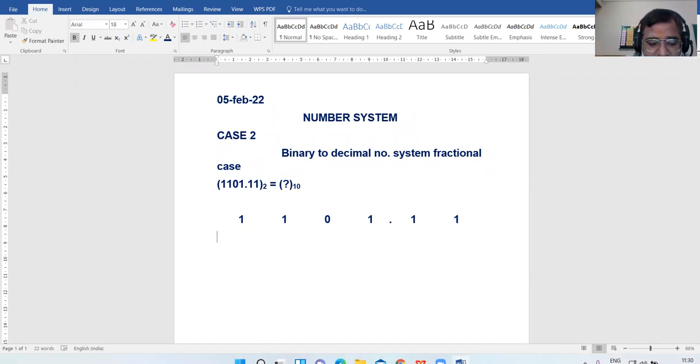The digit before the point - this 1 - will be 2 to power 0. Then 1 into 2 to power 1, 1 into 2 to power 2, and 1 into 2 to power 3. This is very much clear to you now.